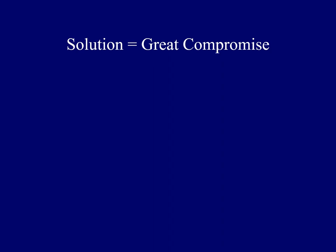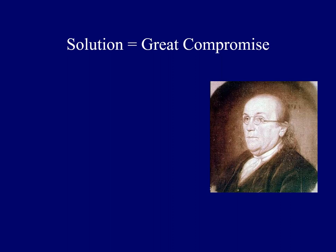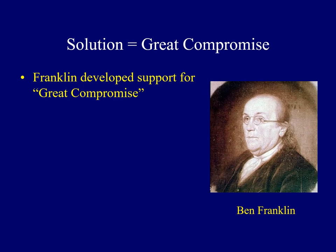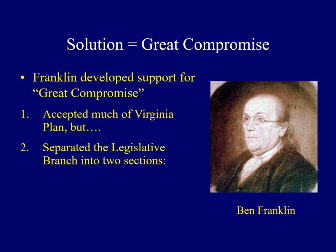The success of the convention was threatened by the issue of how each state would be represented — big or small. Finally, cooler heads prevailed when the oldest delegate, Benjamin Franklin, developed support for what came to be known as the Great Compromise. It actually accepted much of Madison's Virginia Plan, but it had a key distinction. It separated the legislative branch into two different chambers. The upper chamber would be the Senate, and every state would be treated equally with two senators. In the House of Representatives, the number would be determined by each state's population. This struck a balance between the big and the small states.